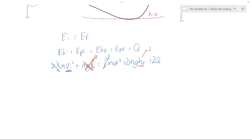Now, the next thing I want to do here, let me write this out again. m(vi)² = m(vf)² + 2mghf + 2Q.